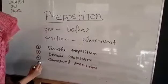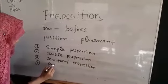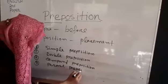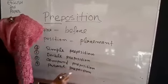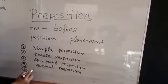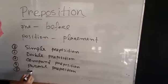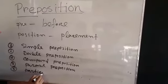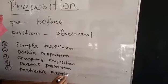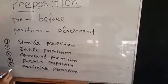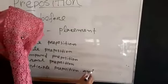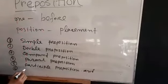Number four: phrase prepositions. Number five: participle prepositions. And number six: disguised prepositions.